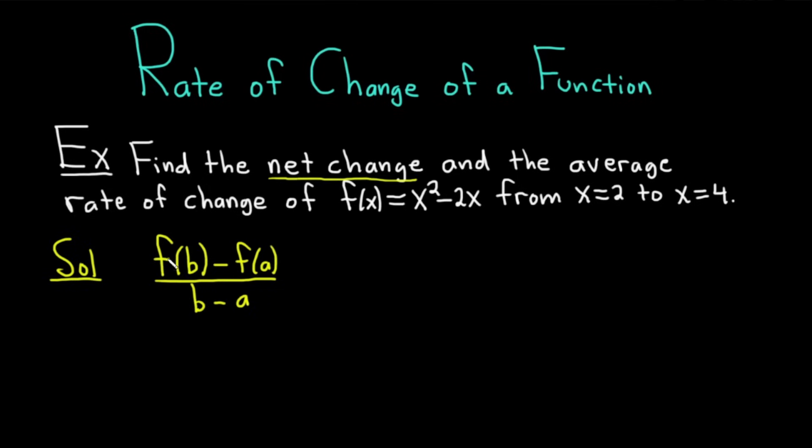This is the average rate of change formula and in this problem a is 2 and b is 4. So this is equal to f(4) - f(2) over 4 - 2.